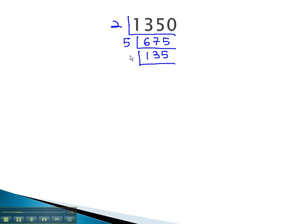Again, that ends in a 5, and so I'm going to divide by 5 a second time. This leaves me with 27, which we know is divisible by the prime number 3.